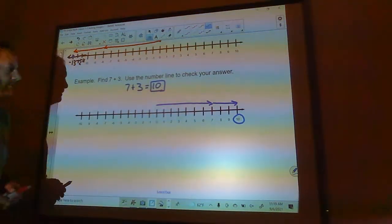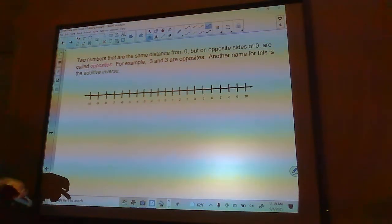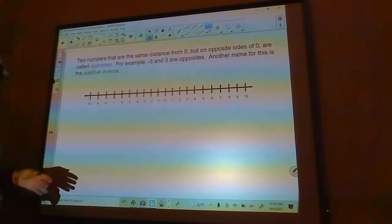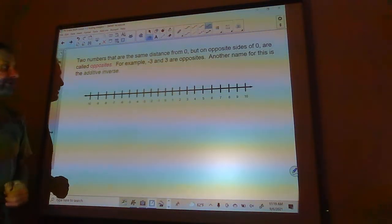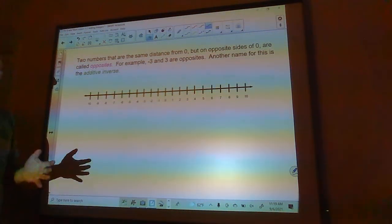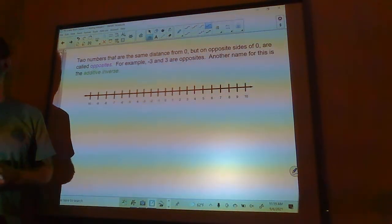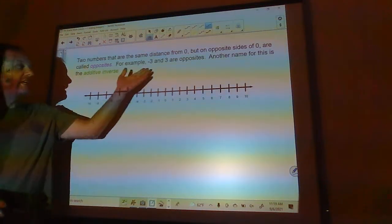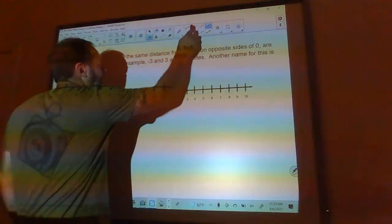Remember, when you take the second number, when you're adding the second number, you always go from where you ended the last one. Okay, two numbers that are the same distance from 0 but on opposite sides of 0 are called opposite numbers, but they have another name that's more important. It's called the additive inverse. And the reason for that is if numbers are additive inverses of each other, then they make each other add up to 0.